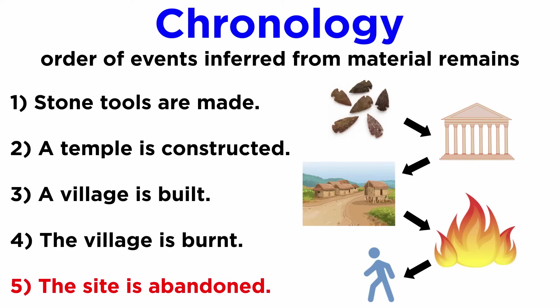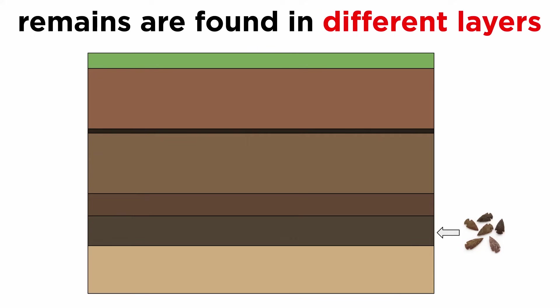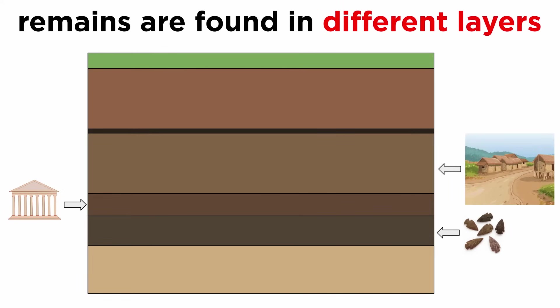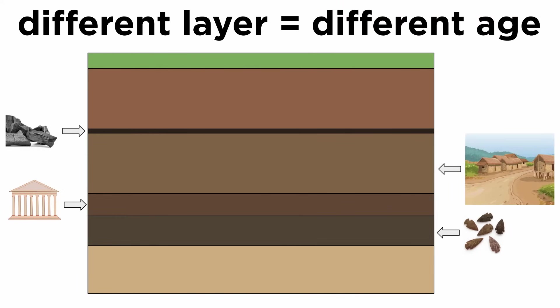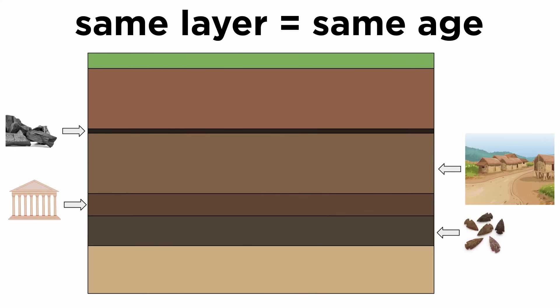The site is abandoned. What might that have looked like in the ground? In the lowest layers, we find stone tools. On top of those stone tools, we find remains of a temple. On top of the remains of that temple, we find the remains of houses, and so on. If the law of superposition tells us that artifacts in different layers have different ages, that means artifacts in the same layer are the same age. If we find deer bones in the same stratigraphic layer as the stone tools, we know that they date to the same time period as the stone tools.